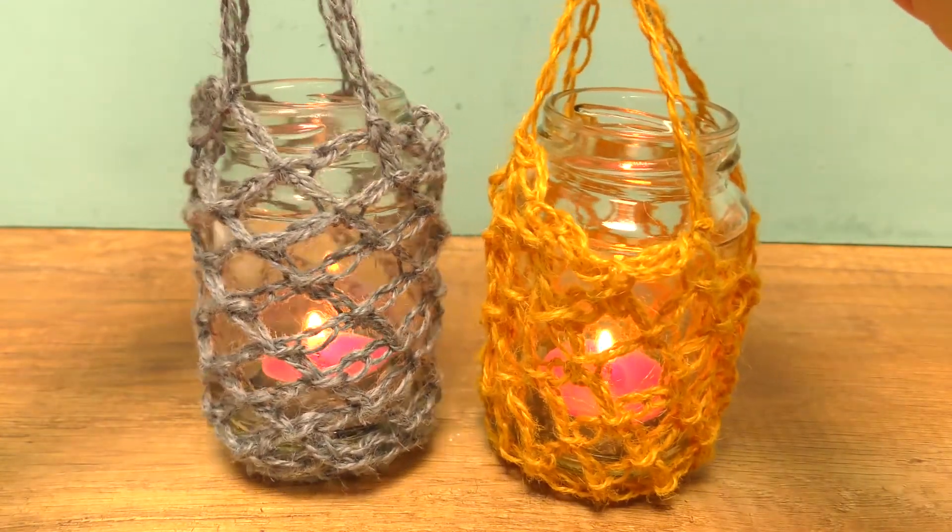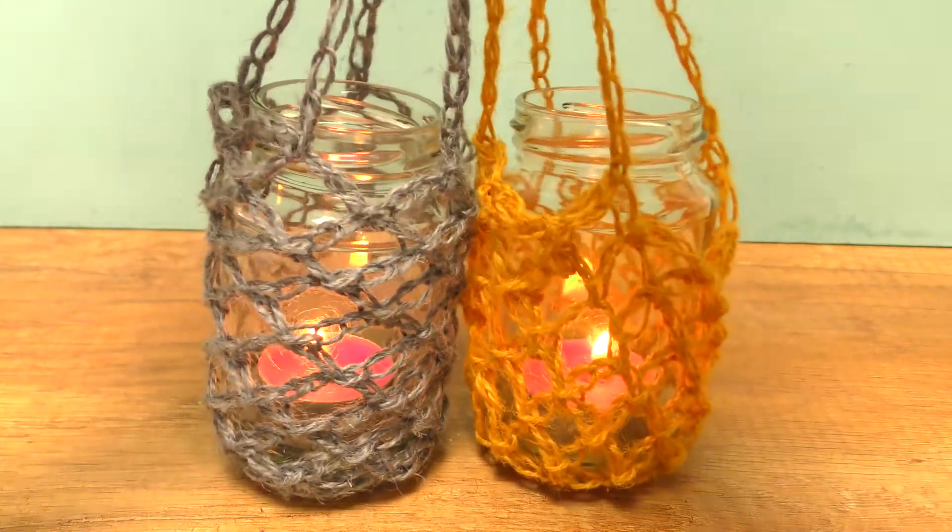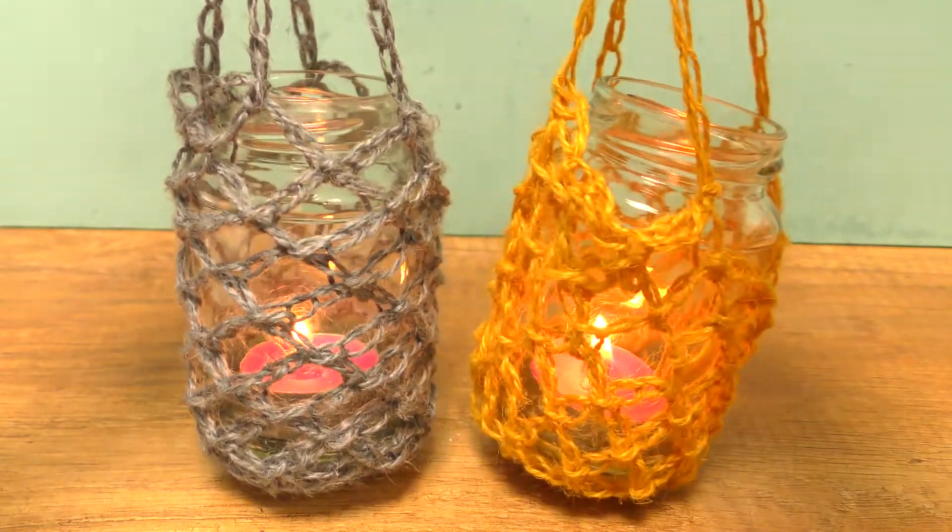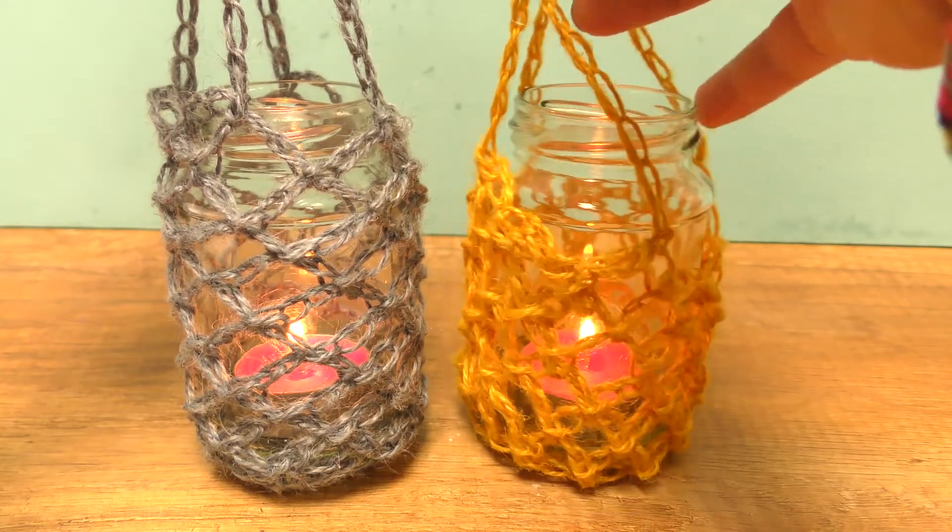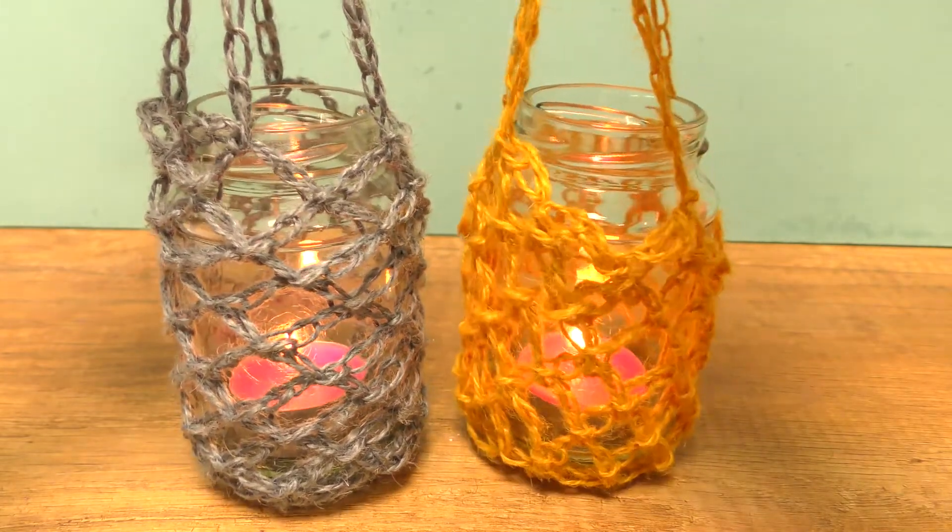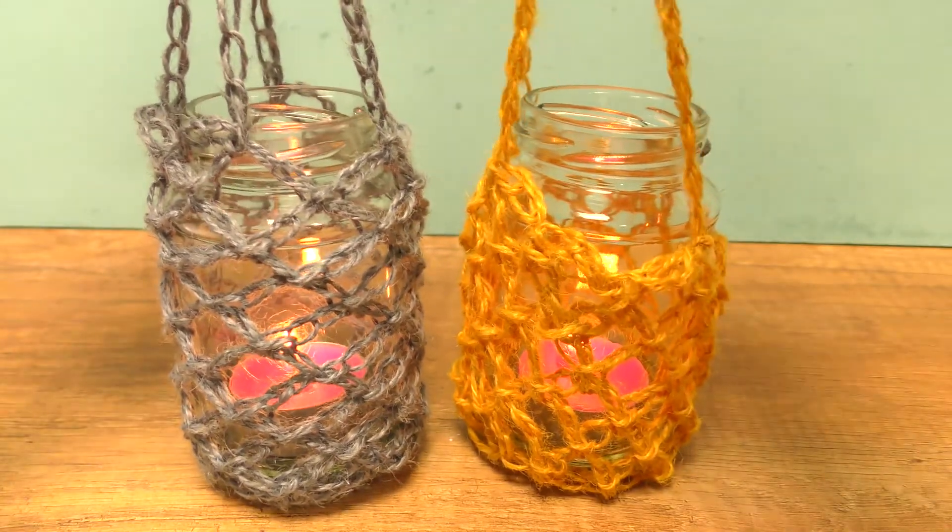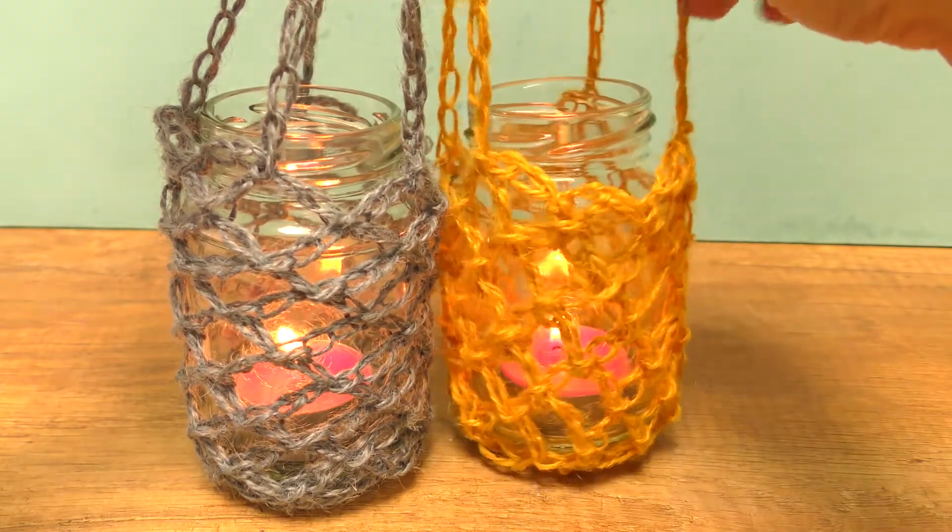So here are the yellow and grey decorative tea light holders. These could also be used as different things, so you could maybe do hanging flower pots or maybe even as a gift idea for somebody. So yeah, I hope you guys enjoyed. Feel free to let me know what you think in the comment section. You can also shoot us a thumbs up if you thought this was fun and would like to see more.